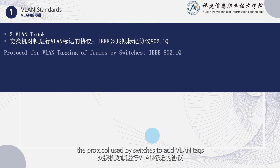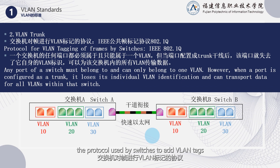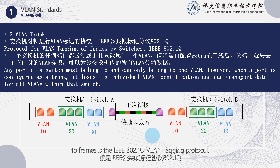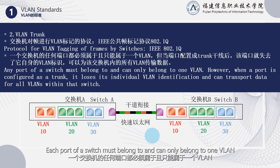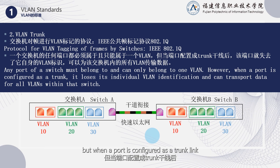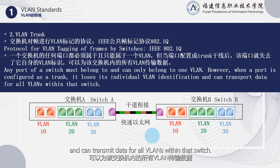In fact, the protocol used by switches to add VLAN tags to frames is the IEEE 802.1Q VLAN tagging protocol. Each port of a switch must belong to and can only belong to one VLAN, but when a port is configured as a trunk link, it loses its own VLAN identification and can transmit data for all VLANs within that switch.